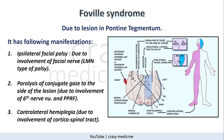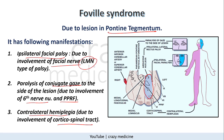Next is Foville syndrome. It is due to a lesion in the pontine tegmentum. It involves the facial nerve nucleus causing ipsilateral facial nerve palsy, which is lower motor neuron type. Then there is involvement of the sixth nerve nucleus and PPRF — that is the paramedian pontine reticular formation — which will cause conjugate gaze palsy of the same side. I have uploaded a detailed video on internuclear ophthalmoplegia where I have explained PPRF and MLF lesion in detail; the link will be in the description below. The last involvement is the corticospinal tract which will cause contralateral hemiplegia.